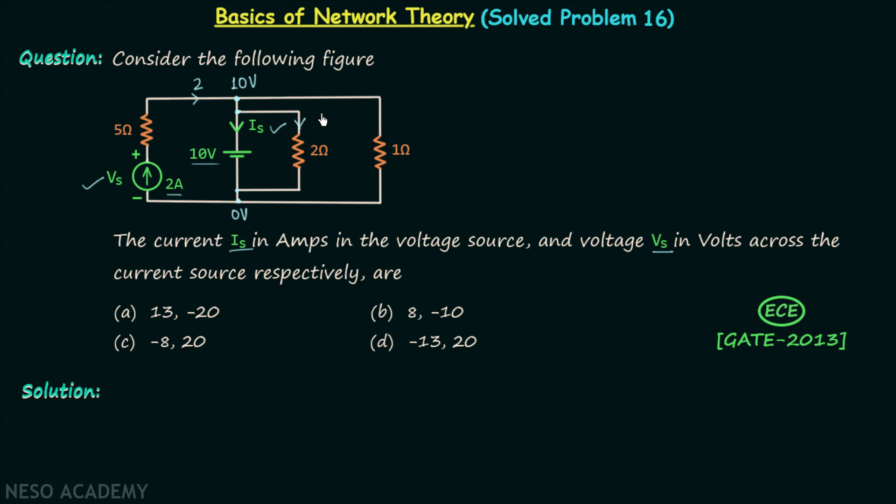And now it is very easy to find out current in this branch. The current will be equal to the voltage which is 10 minus 0, that is 10, divided by the resistance which is 2. So current equal to 5 amperes is flowing in this branch. And in this branch the current will be 10 minus 0, that is 10, divided by 1. So 10 amperes of current is flowing in this branch.